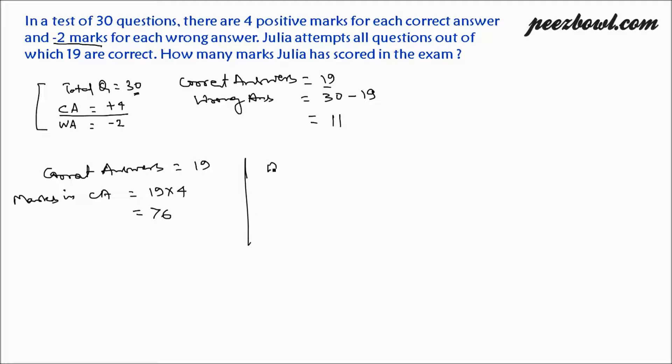And wrong answers. She has got 11 wrong answers. Marks in wrong answer WA is equal to 11 multiplied by minus 2. Because as per the rule there are minus 2 marks for each wrong answer. 11 multiplied by minus 2 is minus 22.